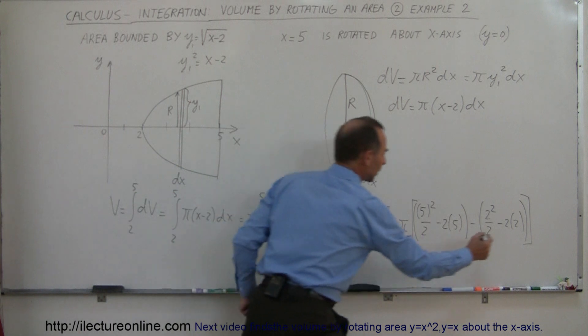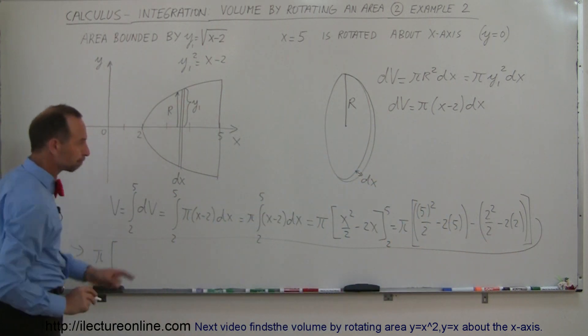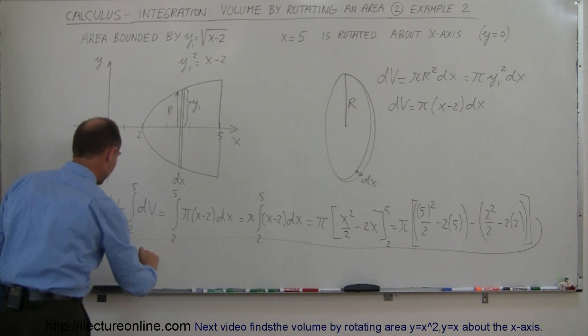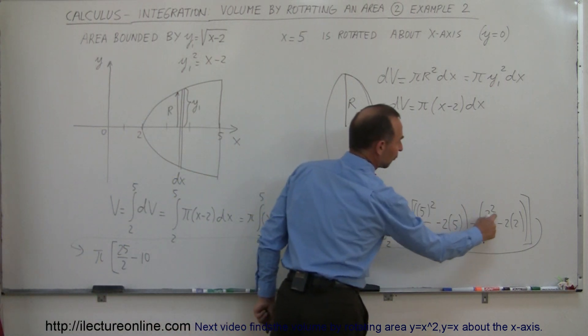Now I need to simplify. So we get π times 25 divided by 2 minus 2 times 5, which is 10. And I have minus 4 over 2, which is 2, so minus 2.